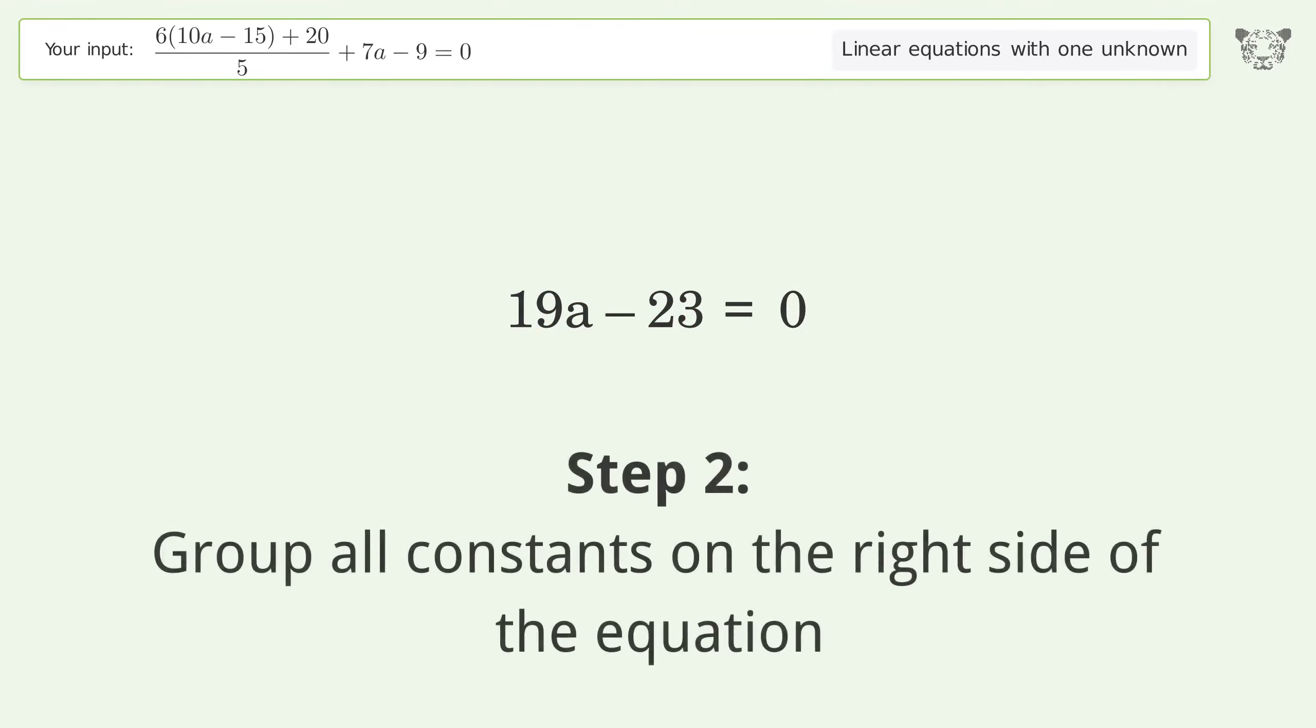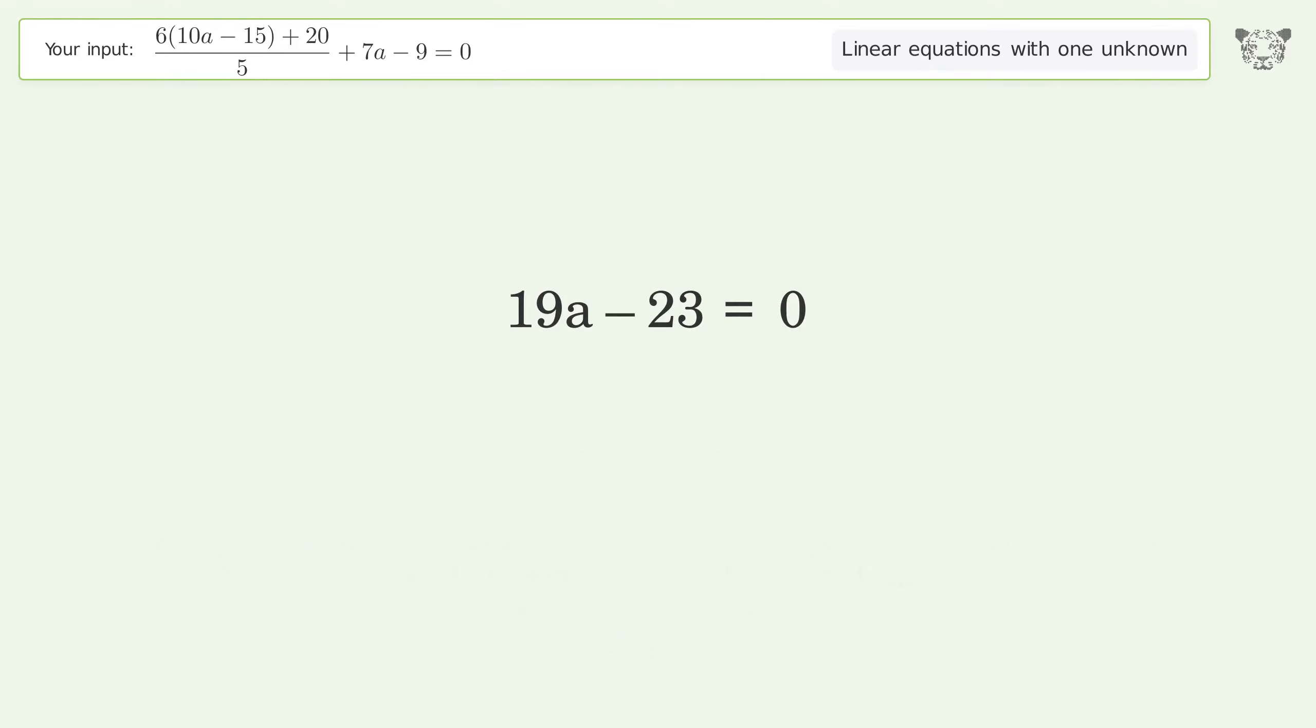Group all constants on the right side of the equation. Add 23 to both sides. Simplify the arithmetic.